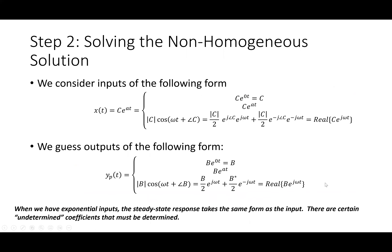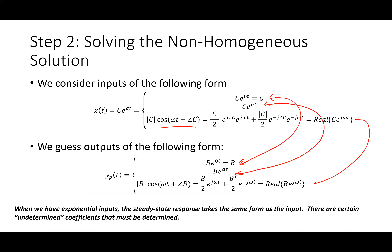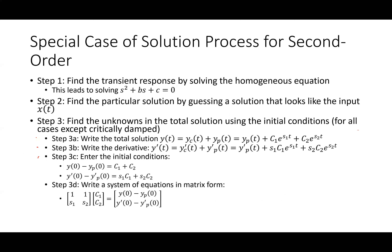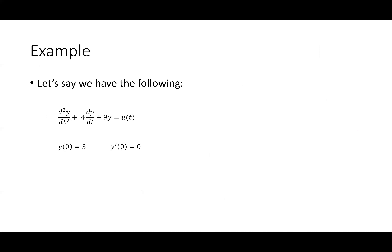We have inputs that are either constants, exponentials, or cosines — all of those are exponentials. If I have a constant input I guess a constant output; an exponential input, I guess an exponential; a sine wave input, I guess a sine wave. Then I go through the process of finding the unknown coefficients in that guess.